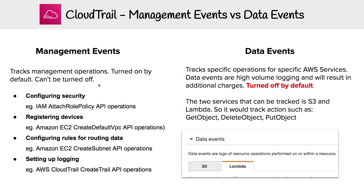The categories include configuring security, such as attaching a role policy; registering devices; configuring rules for routing data; and setting up logging. Overall, 90% of events in CloudTrail are management events.